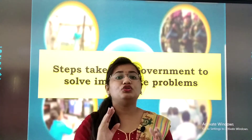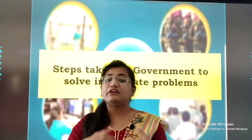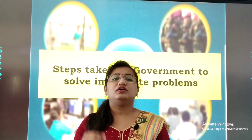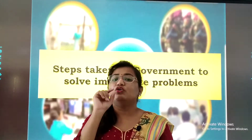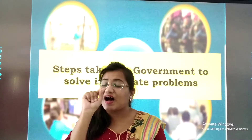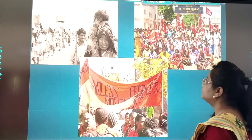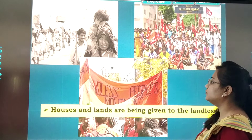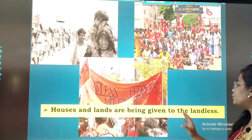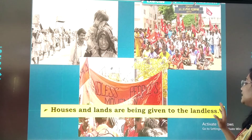So what is the government doing to solve our problems? Today we will learn this. Let's quickly go through all the points — that is, steps taken by government to solve immediate problems. Jo problems turnt solve ho sakti hai, usmei government kya kya steps le re hai. Take out your textbook, go through each and every point and mark it. The first one: houses and lands are being provided or are being given to the landless.